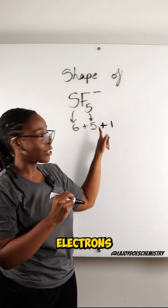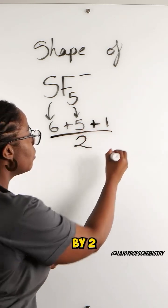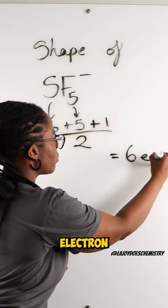That tells us the total number of electrons around that central sulfur so to find the electron pairs we divide that by two and that gives us six electron pairs.